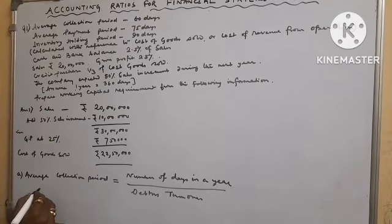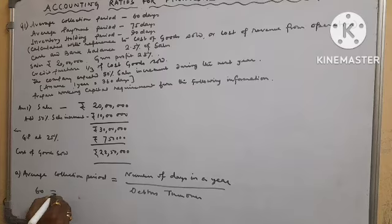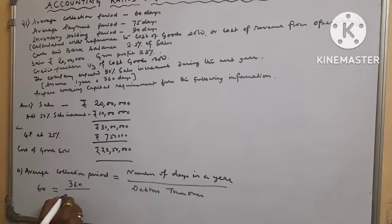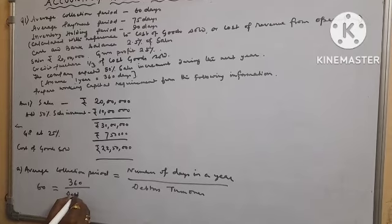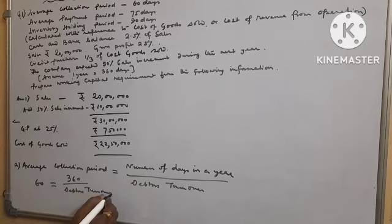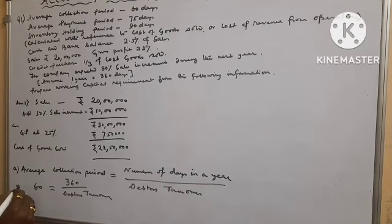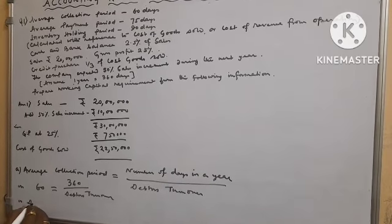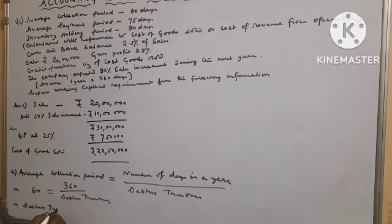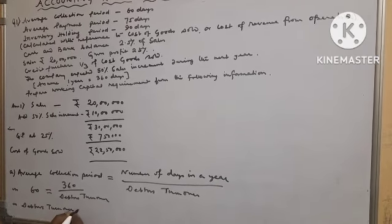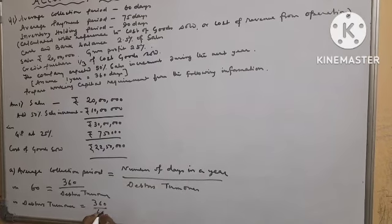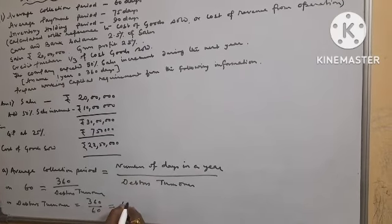Average collection period equals to 60 days, number of days in a year question says equals to 360, divided by debtors turnover. So 60 equals to 360 divided by debtors turnover, debtors turnover equals to 6 times.